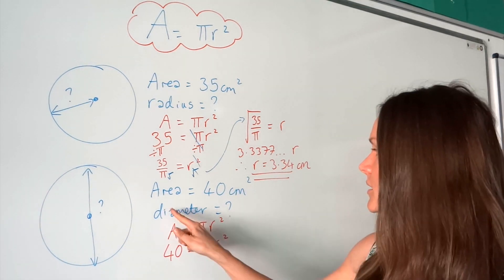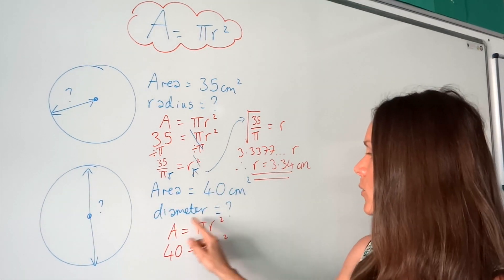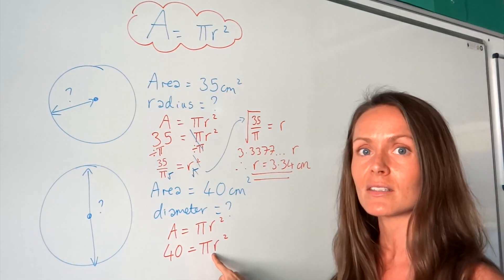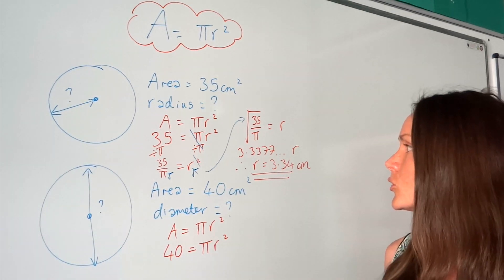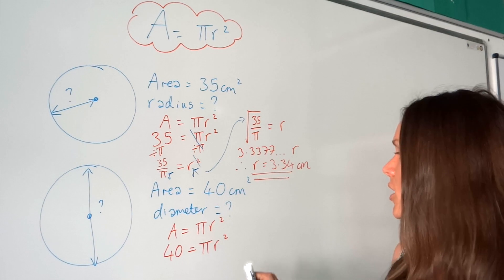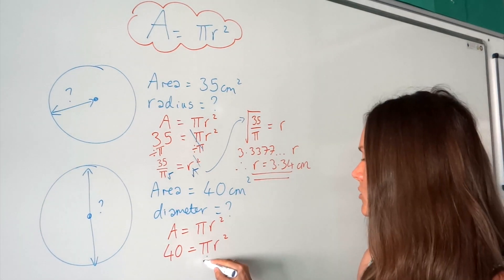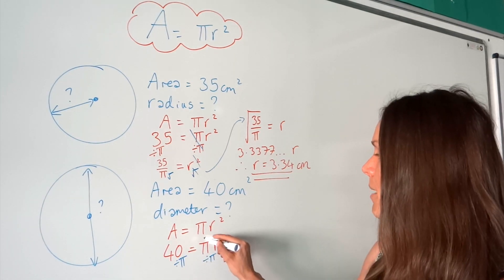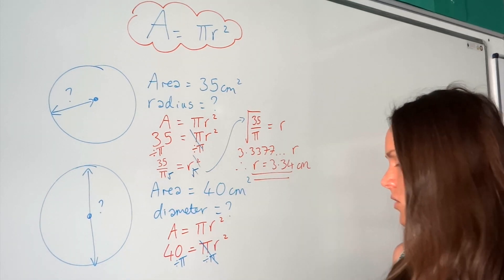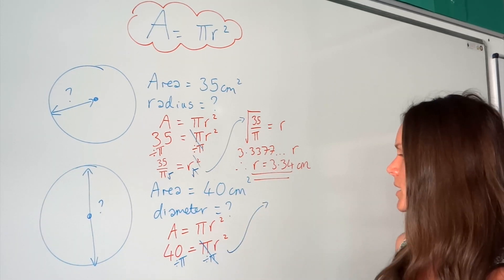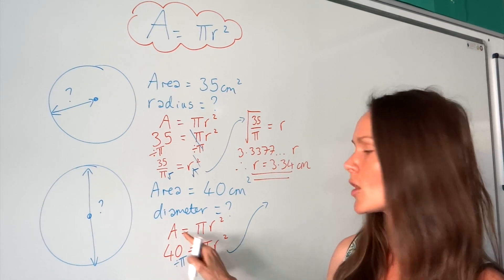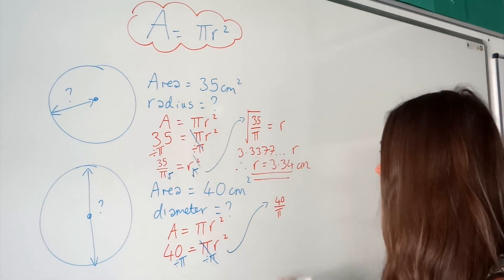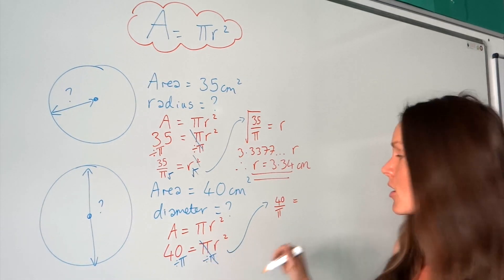Don't worry about the fact we're asked to find the diameter and in my equation I don't have d — it doesn't matter, we'll worry about that later. First we're just going to find the radius r. Just like before, you're going to divide by pi on both sides, because the opposite of multiplying by pi is to divide by pi, to keep the equation balanced. Remember, when you do the opposite, it cancels. So on the left-hand side we've got 40 over pi, and on the right-hand side we're left with r squared.